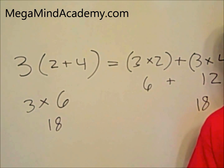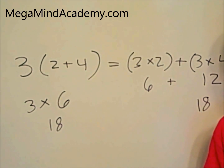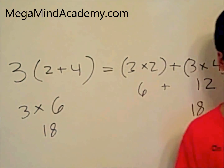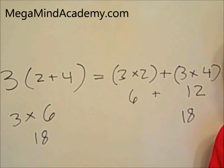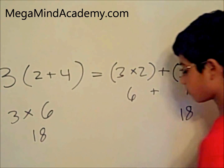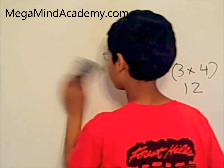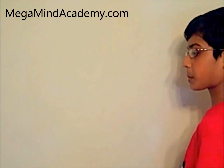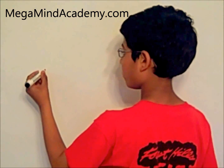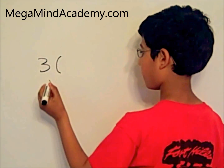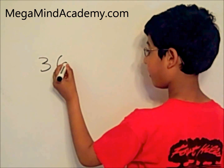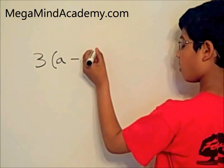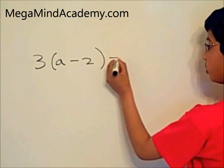This is an example of the distributive property of multiplication over addition. Let's look at an example with a variable inside. So, 3 multiplied by a, which is the variable, minus 2 is equal to 12.